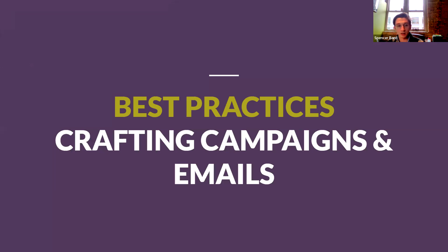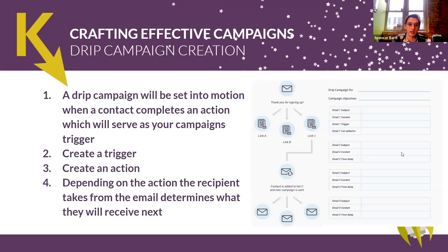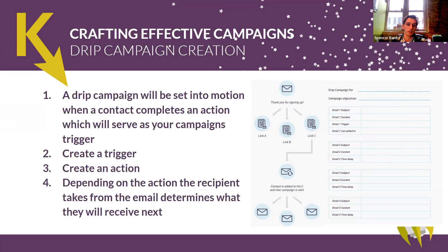For best practices when crafting email campaigns — a drip campaign is set into motion when a contact completes a specific action or is grouped into a specific segment, which serves as the campaign's trigger. The first step is to create that trigger and action. Depending on what action the recipient takes, that will determine the next step. For example, if you send a thank you for signing up email with three links, depending on which link they choose, that can either be the end of the road or take them to another campaign. Think with the end goal in mind — what is that end call to action you want them to complete?